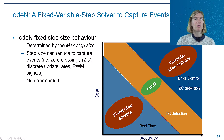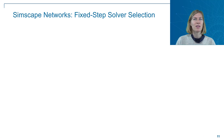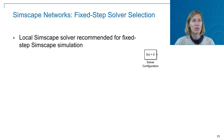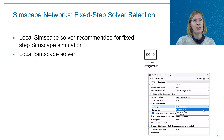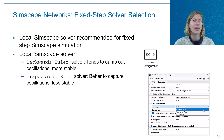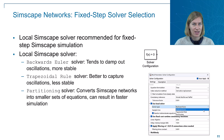When working with a true fixed step solver, the first recommendation is to use a local Simscape solver, which lives in the solver configuration block. Within that, you have different choices: the backwards Euler solver, which tends to damp out oscillation but is more stable; the trapezoidal rule, which is better at capturing oscillations but is therefore less stable; and the partitioning solver, which can convert a larger Simscape network into smaller sets of equations — not suitable for all Simscape models, but it can result in faster simulation.